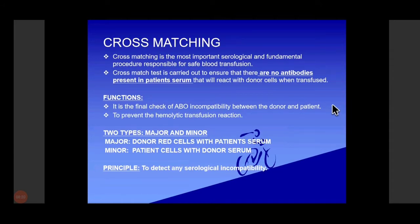Next, we can discuss cross-matching. Cross-matching is the most important serological and fundamental procedure responsible for safe blood transfusion. It is carried out to ensure there are no antibodies in the patient's serum. It is a final check of ABO incompatibility between the donor and the patient, and is used to prevent hemolytic transfusion reactions. There are two types: major and minor.